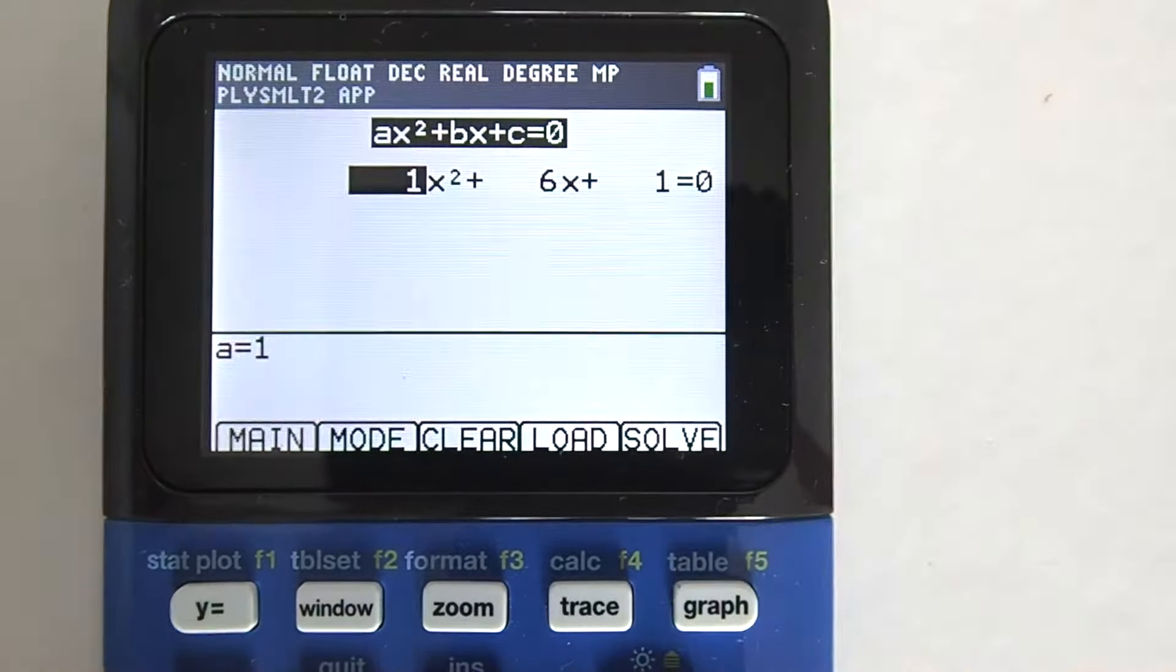Now we are ready to solve the equation by going to the solve tab by pressing this graph key. And here is the answer. X equals 2 and x equals negative 4. From here if you want to enter another equation to solve, then go to this coefficient tab here by pressing the zoom key. Now you can enter your next equation. I am going to go back to the previous screen.